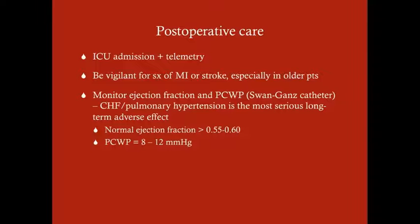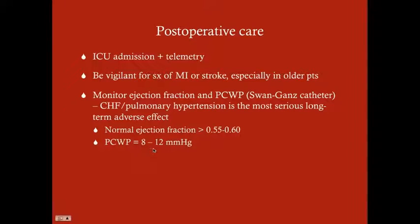Normal PCWP is 8–12 mmHg. This distinction is clinically important: a patient showing signs of low perfusion and hypotension — if PCWP is low, they need more fluids; if PCWP is high (above 12), it indicates pulmonary hypertension. Know that you must monitor ejection fraction and pulmonary capillary wedge pressure post-operatively.